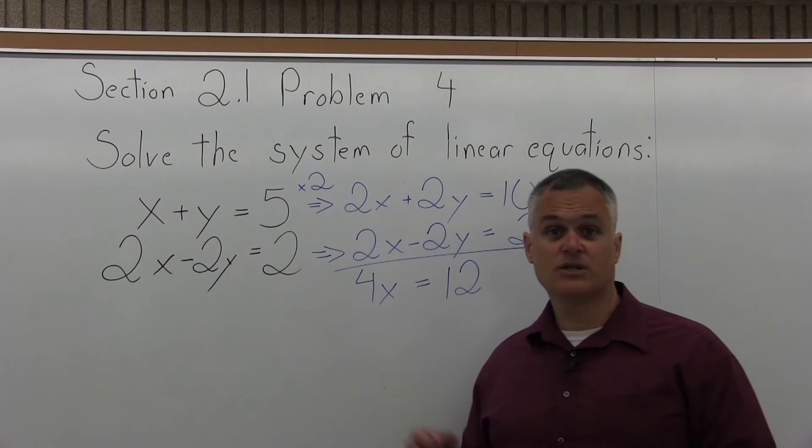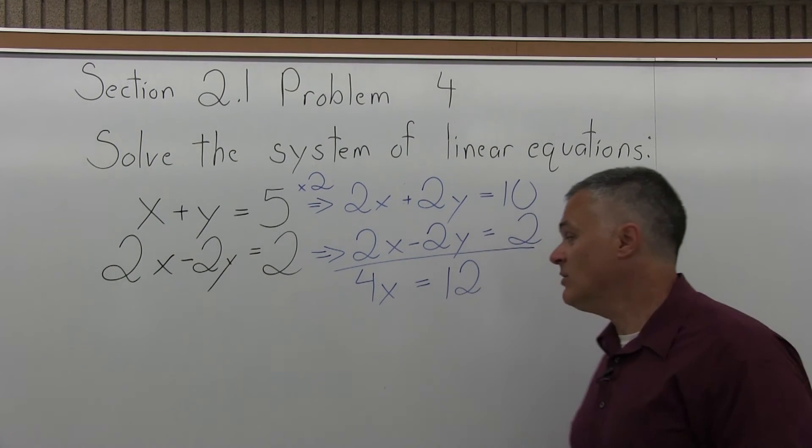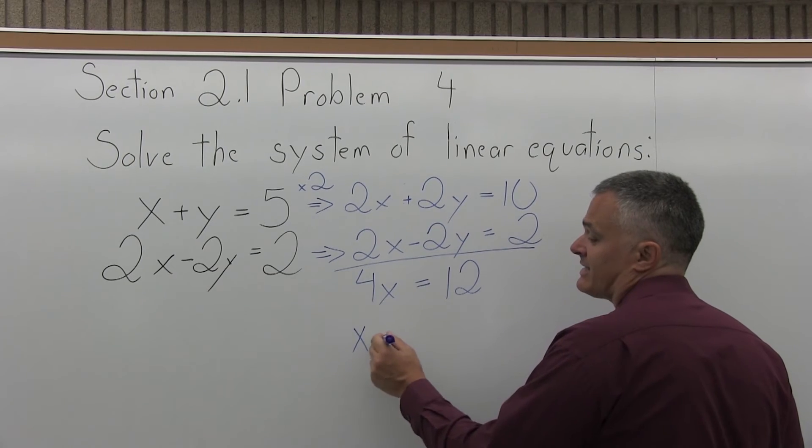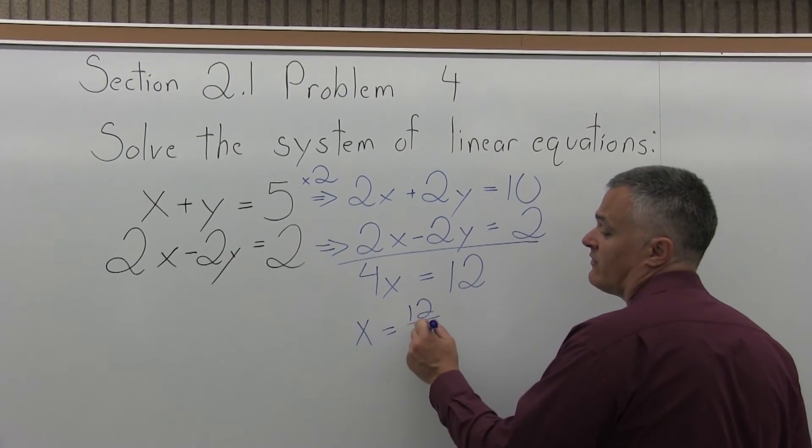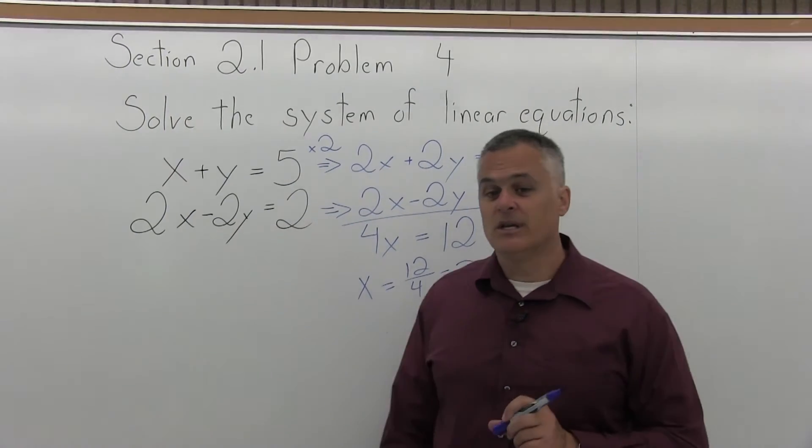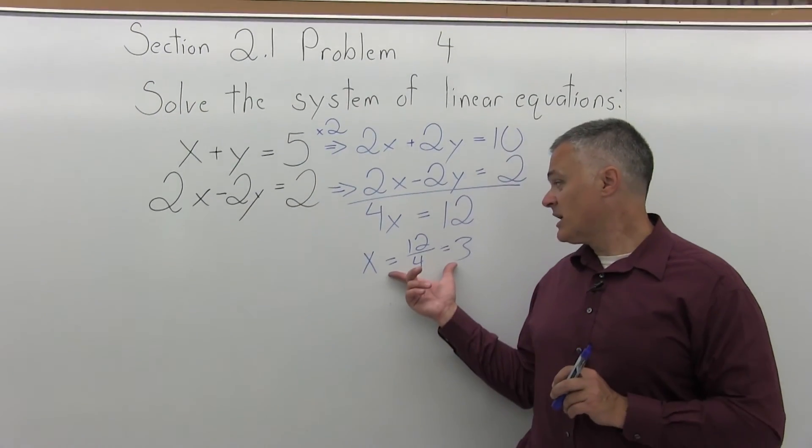Step three is solve for the remaining variable. So I need to divide out the 4. So I'll have x equals 12 divided by 4 will give me x is 3. And that's step three, solve for the remaining variable.